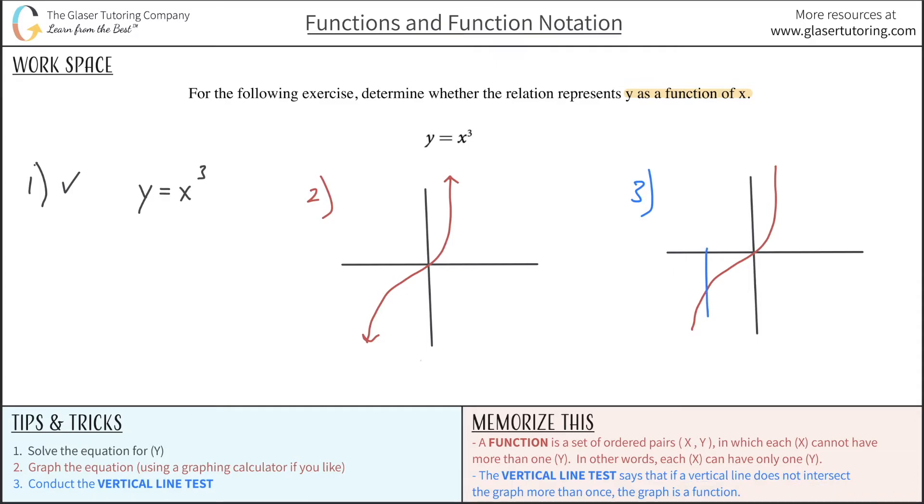So if I draw a vertical line here, it will only intersect the graph there. If I draw it here, only there. If I draw it here, only at that one spot.